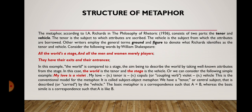Now, let's speak about the structure of metaphor. According to Richards in The Philosophy of Rhetoric, the metaphor consists of two parts: the tenor and the vehicle. The tenor is the subject to which attributes are ascribed. The vehicle is the subject from which the attributes are borrowed. Other writers employ the general terms ground and figure to denote what Richards identifies as tenor and vehicle. Consider the following words by William Shakespeare: 'All the world's a stage and all the men and women merely players; they have their exits and their entrances.' Here, the world is compared to a stage, the world being the tenor and the stage the vehicle.